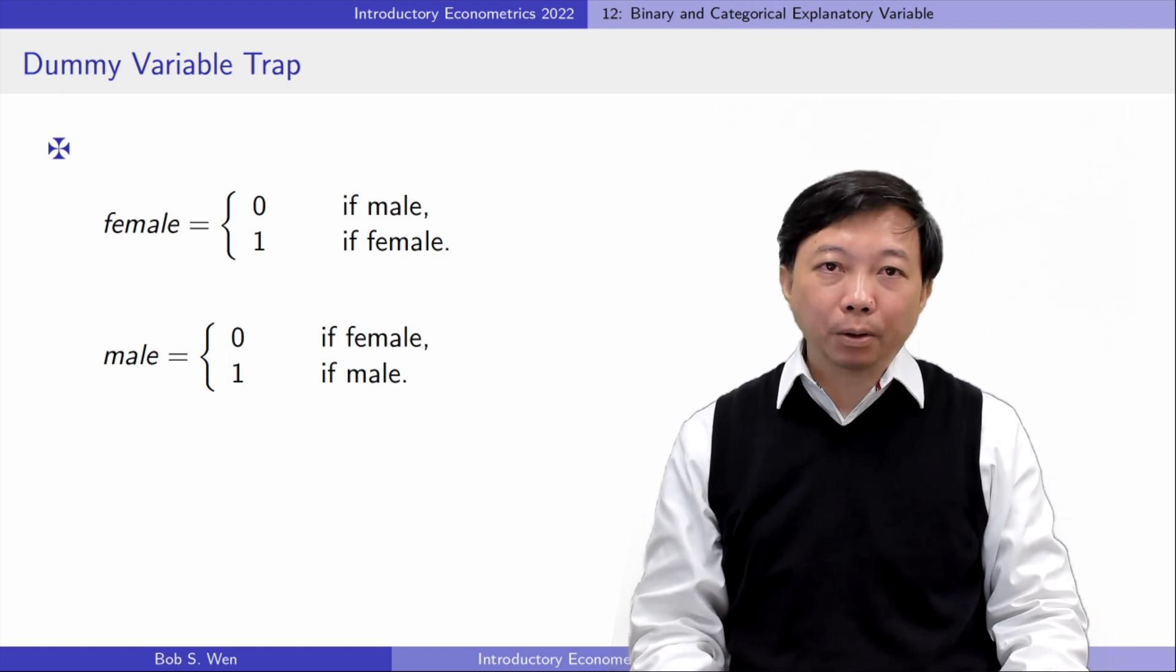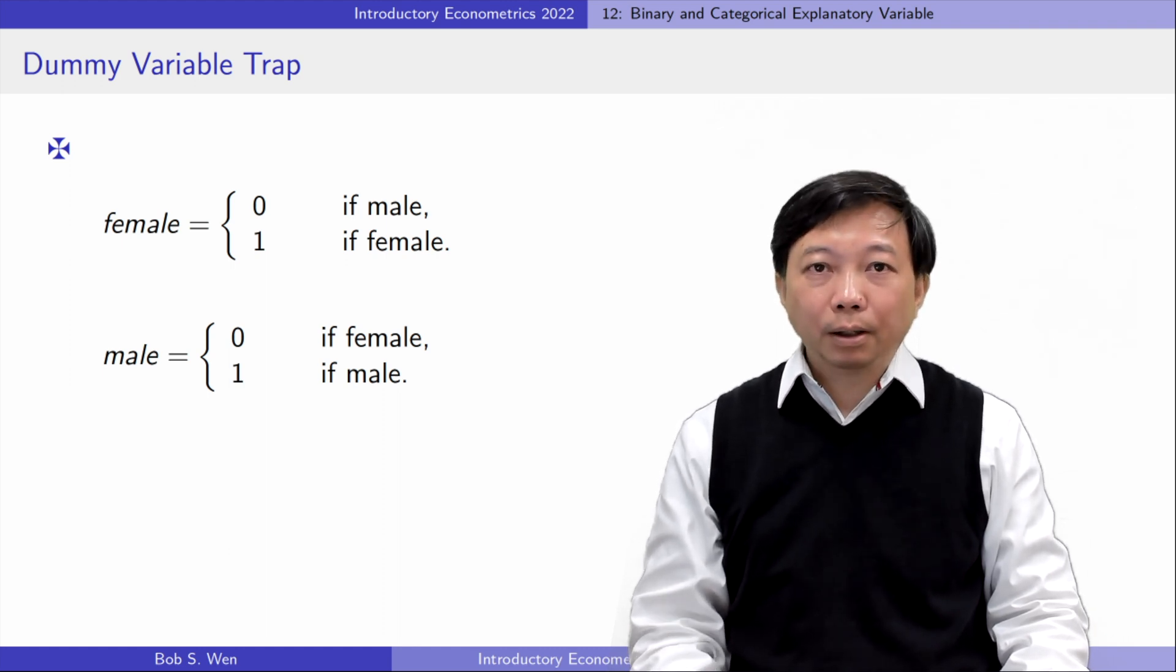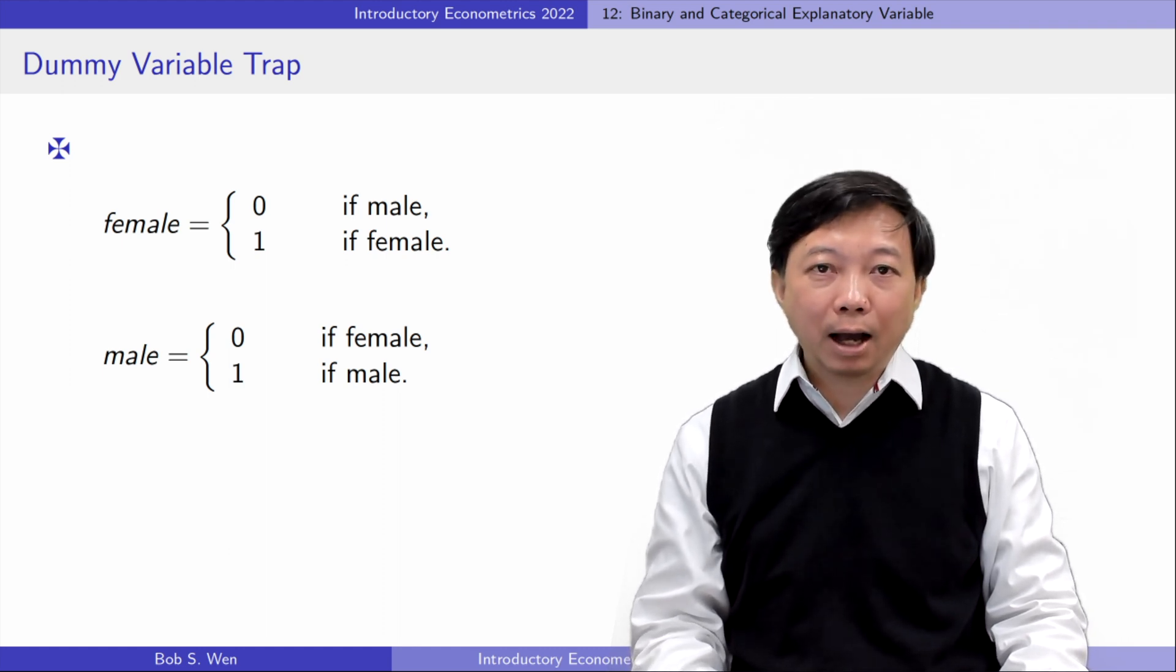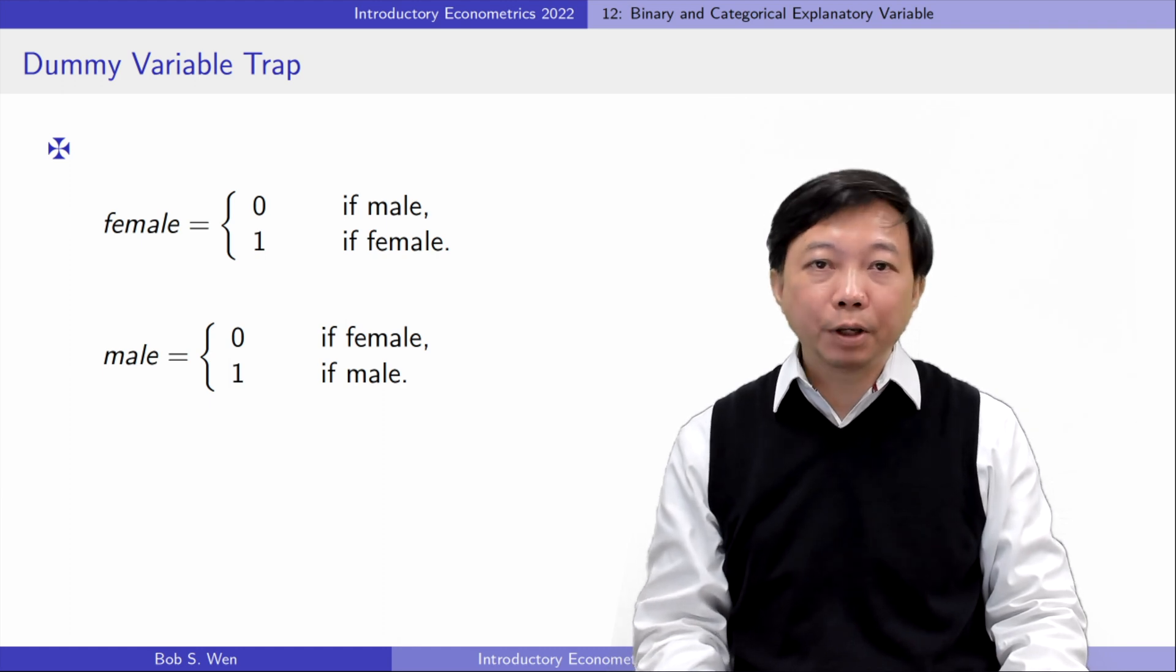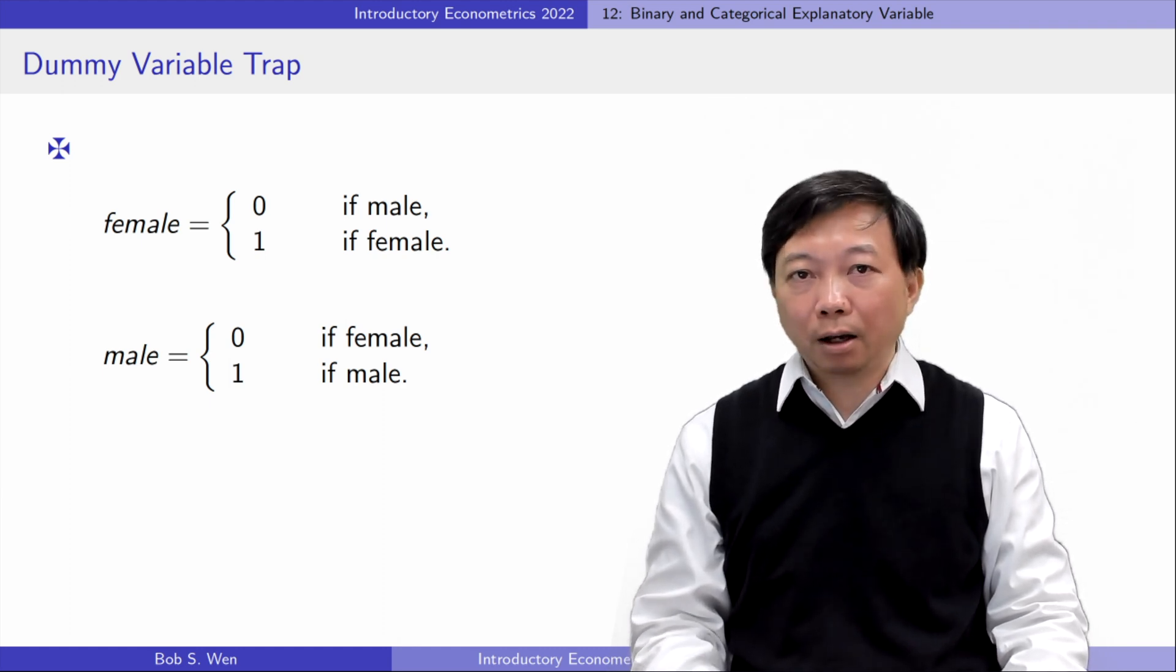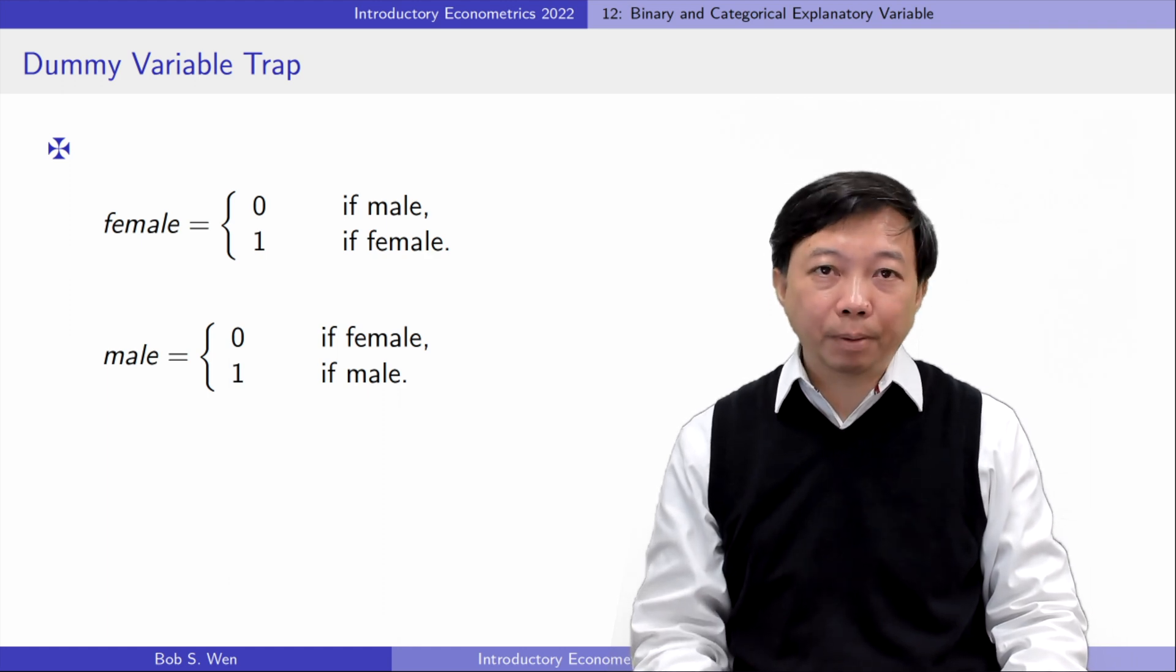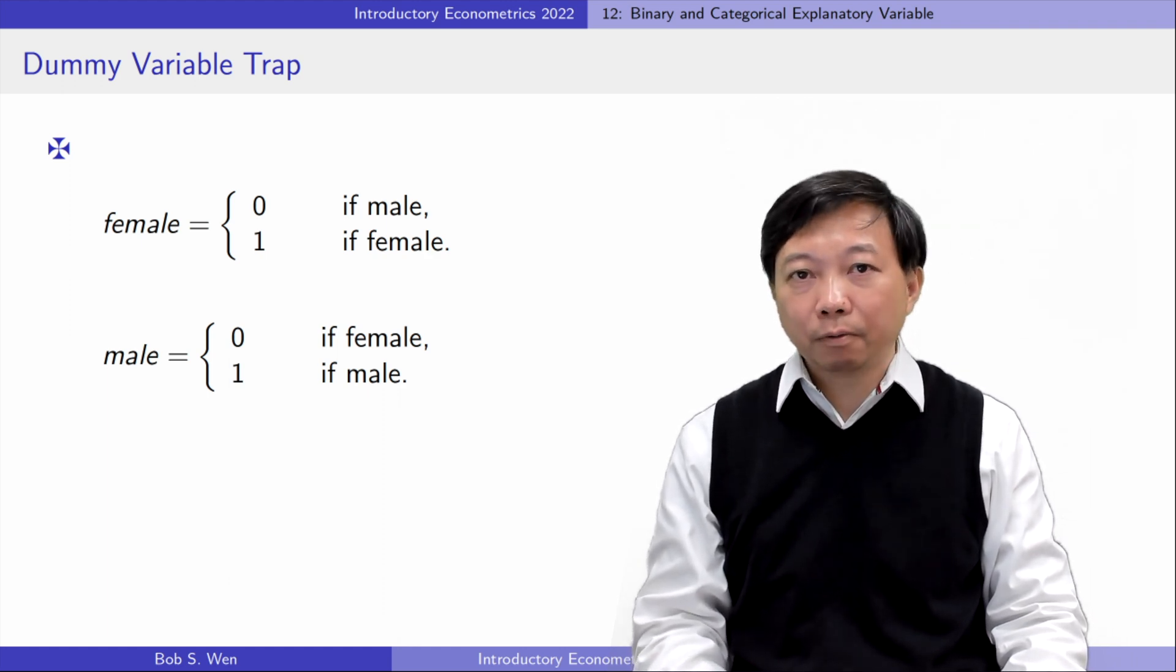For example, in our model, the sample workers are either male or female. We can construct a binary female variable and a binary male variable.